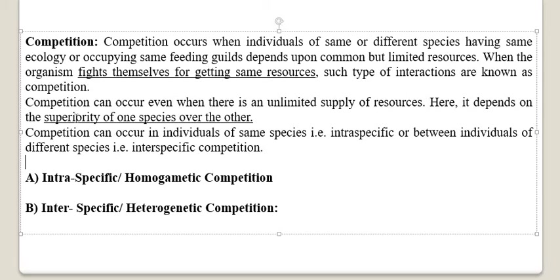After the competition, the one who is stronger and superior will win. The weaker one will lose and have to shift from that habitat. The superior species will reside in that particular locality. Though unlimited resources and shelter are there, these individuals interact to prove the superiority of one species over the other. Competition can occur between the same species — intraspecific — or between different species — interspecific.